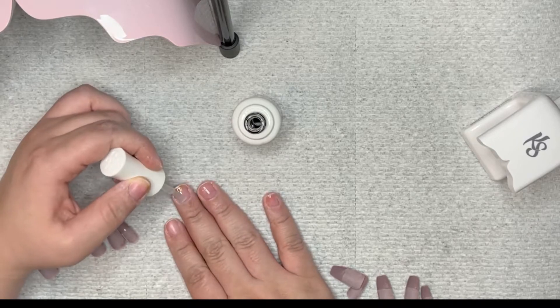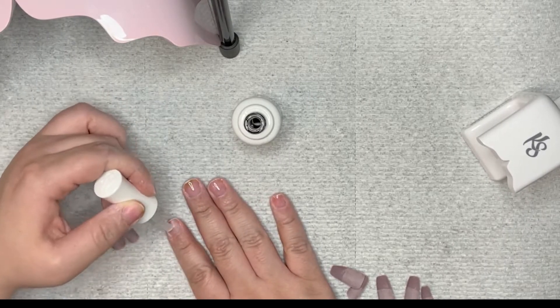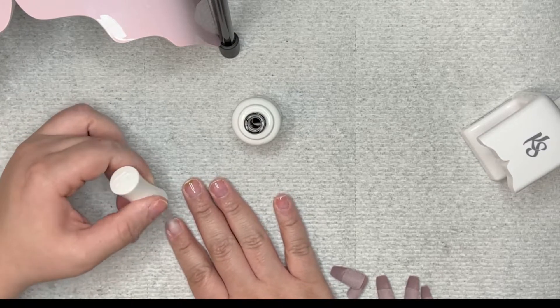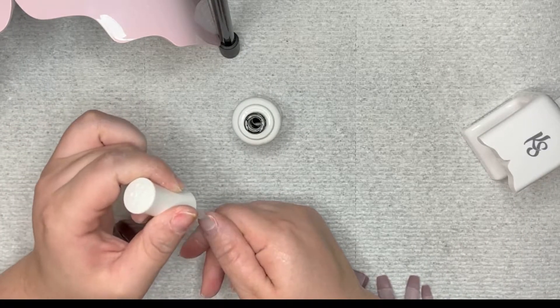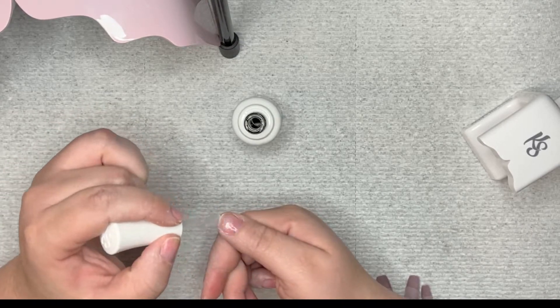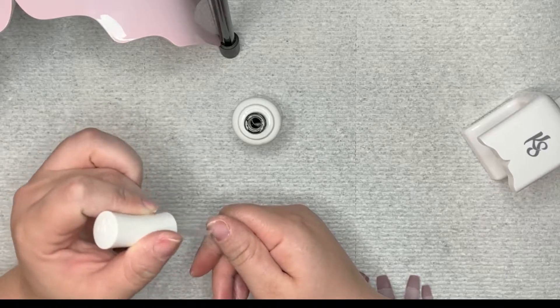As you can see here, I'm applying a thin layer to each nail on my right hand. And then we're going to cure this for 30 seconds in the Kiara Sky Beyond Pro Lamp. That's right over there in the top left corner.